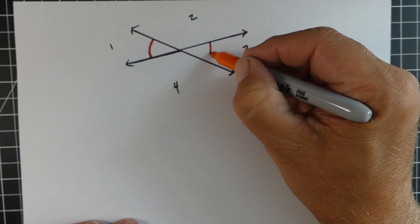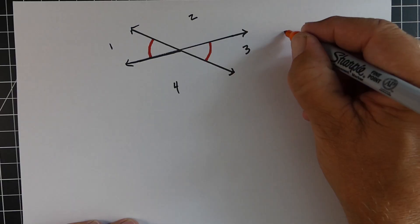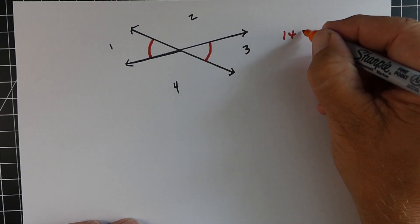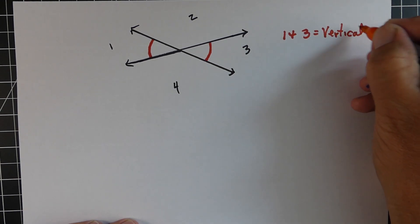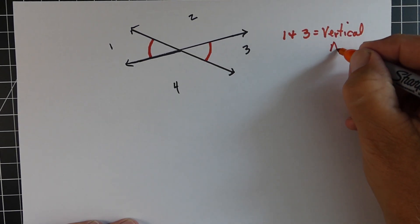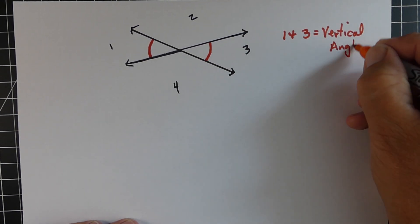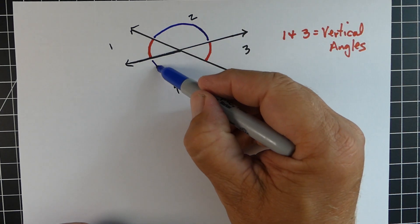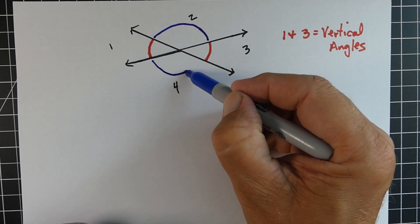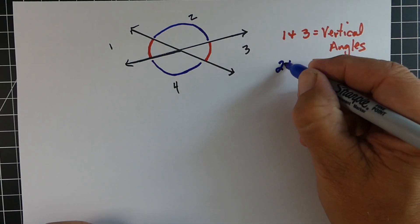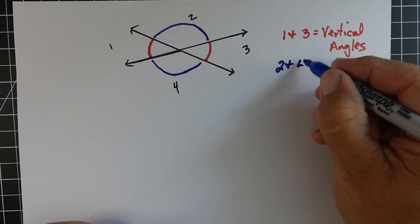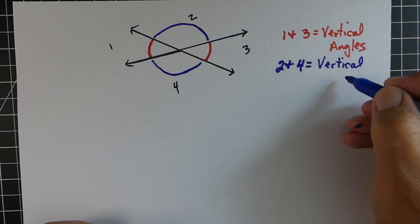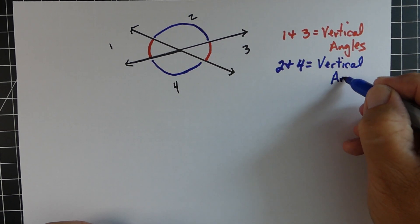Now, these four angles are going to have angles that are across from each other. So in this example, angle one and three are across from each other and these are called vertical angles. Angle two and four are also across from each other — they're also vertical angles. So angles two and four are going to be the same measurement, and one and three are also going to be the same measurement.